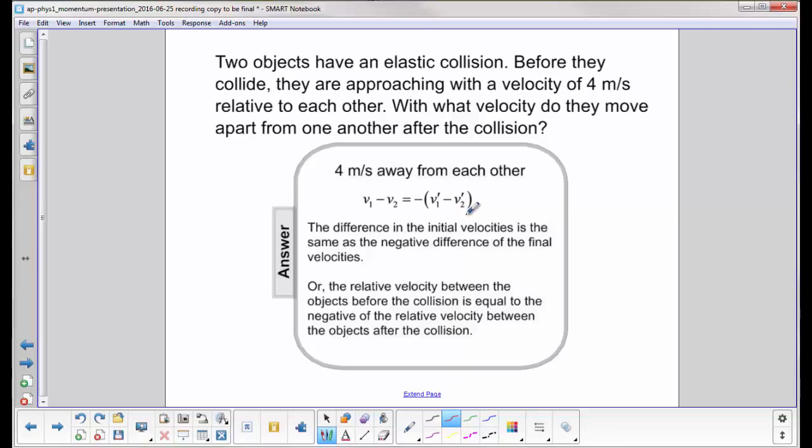So if they're approaching, at the end they'll be retreating from each other. And another way to say this is the relative velocity between the objects before the collision is equal to the negative of the relative velocity after the collision.